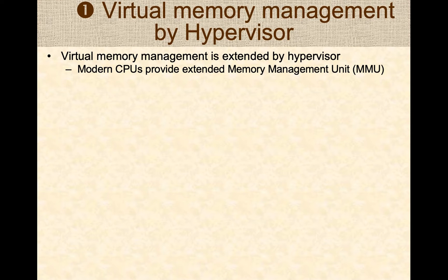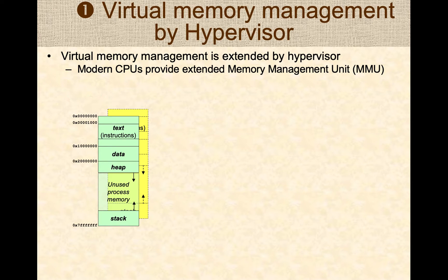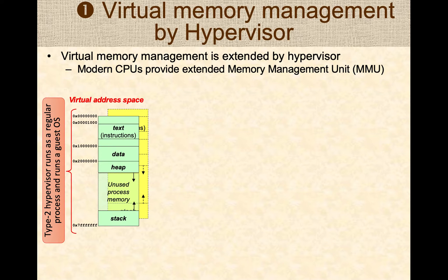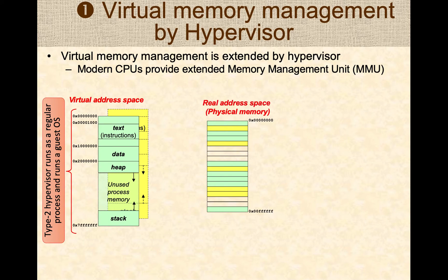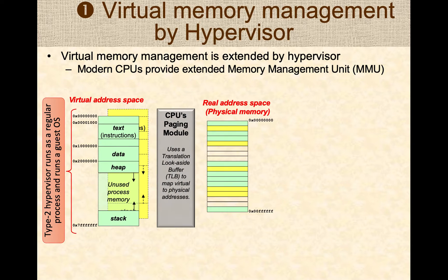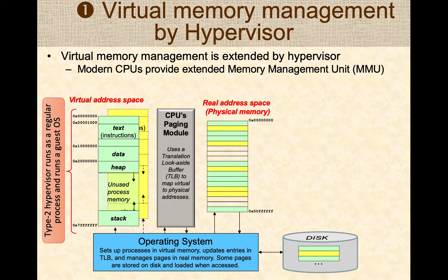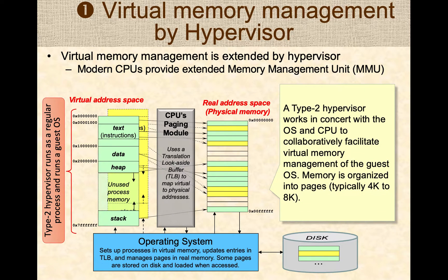Let's start with virtual memory management. Most modern operating systems use virtual memory where processes run in virtual address space, not physical or real address space. One of these processes could be your Type 2 hypervisor running as a regular process, which internally runs a guest operating system. These virtual memory addresses have to be mapped to real memory addresses via the CPU's memory management unit, which translates virtual memory addresses into physical memory addresses. The hypervisor works in concert with the guest operating system and the CPU to facilitate this virtual memory management.